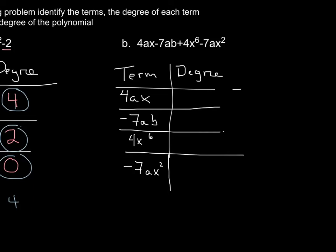Now we have two different variables. When a term has two different variables, you add the exponents to find the degree of that term. 4ax has a to the first and x to the first, so the degree is 2. Negative 7ab also has a degree of 2. 4x to the sixth has a degree of 6. For negative 7ax squared, a has an exponent of 1 and x has an exponent of 2, so we add 1 plus 2, giving a degree of 3.